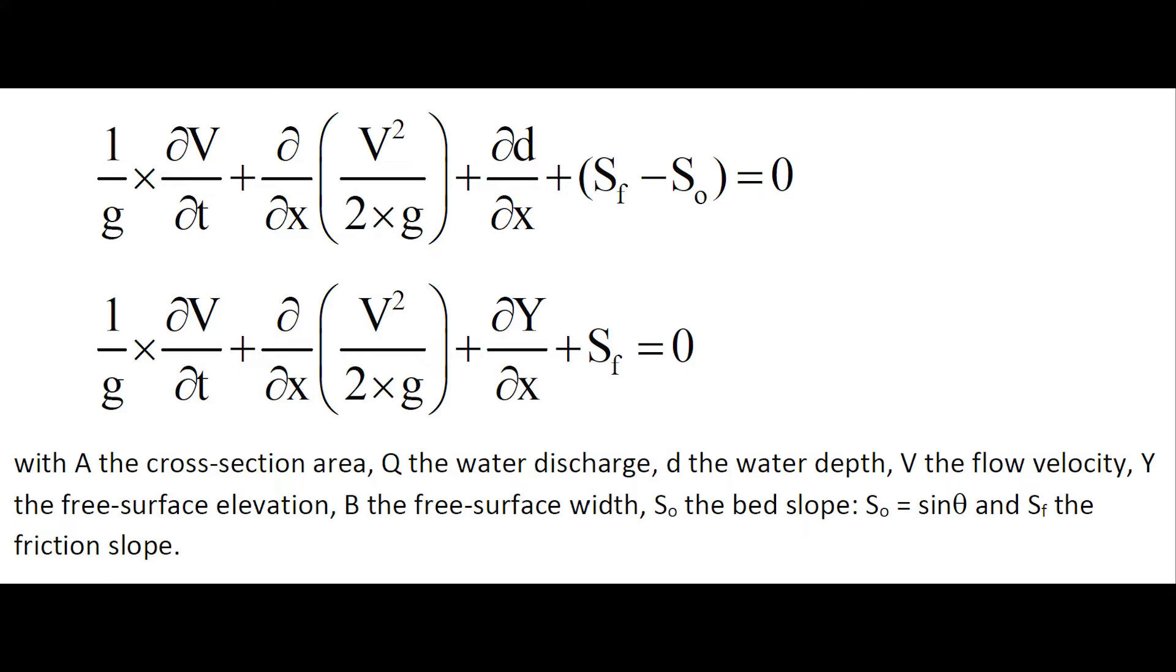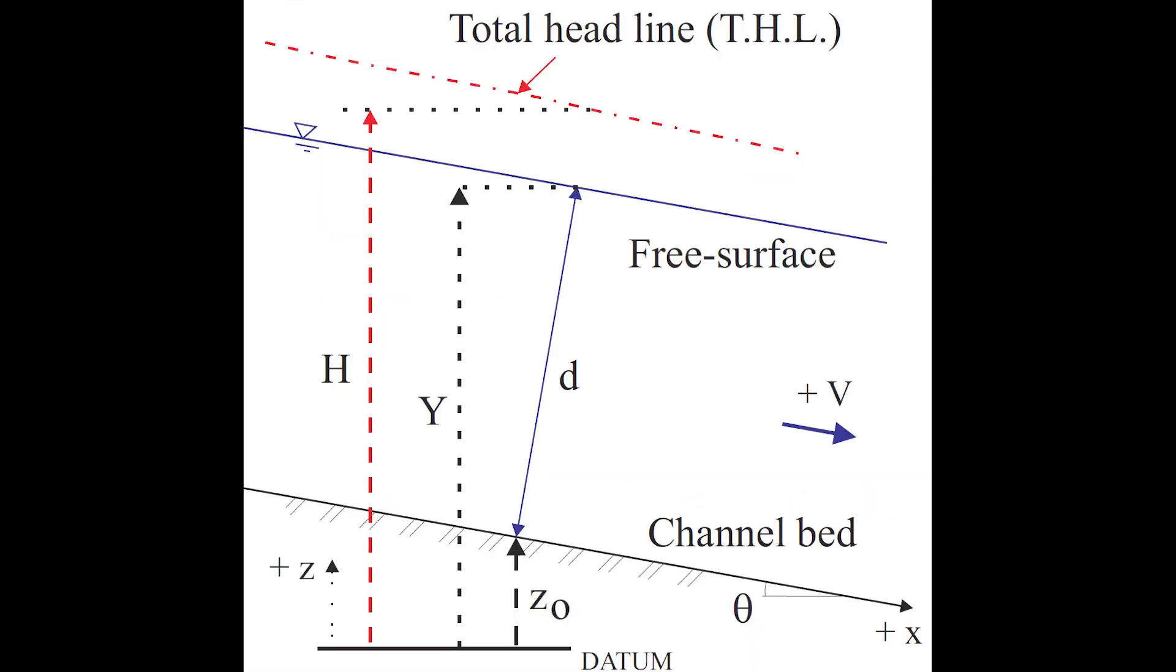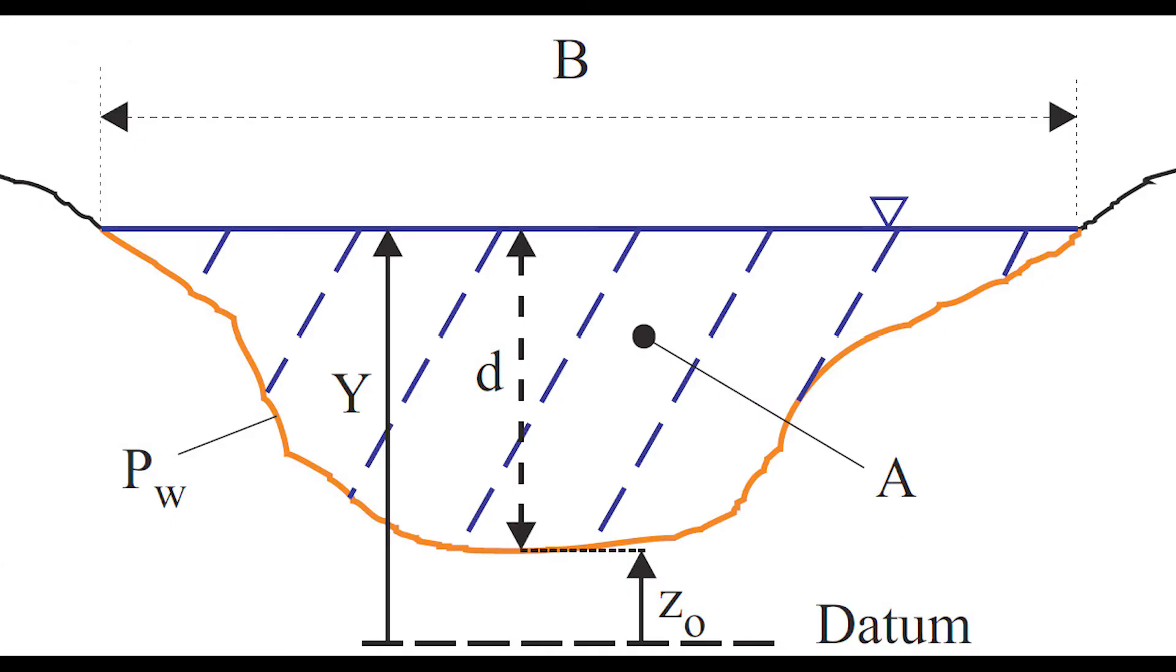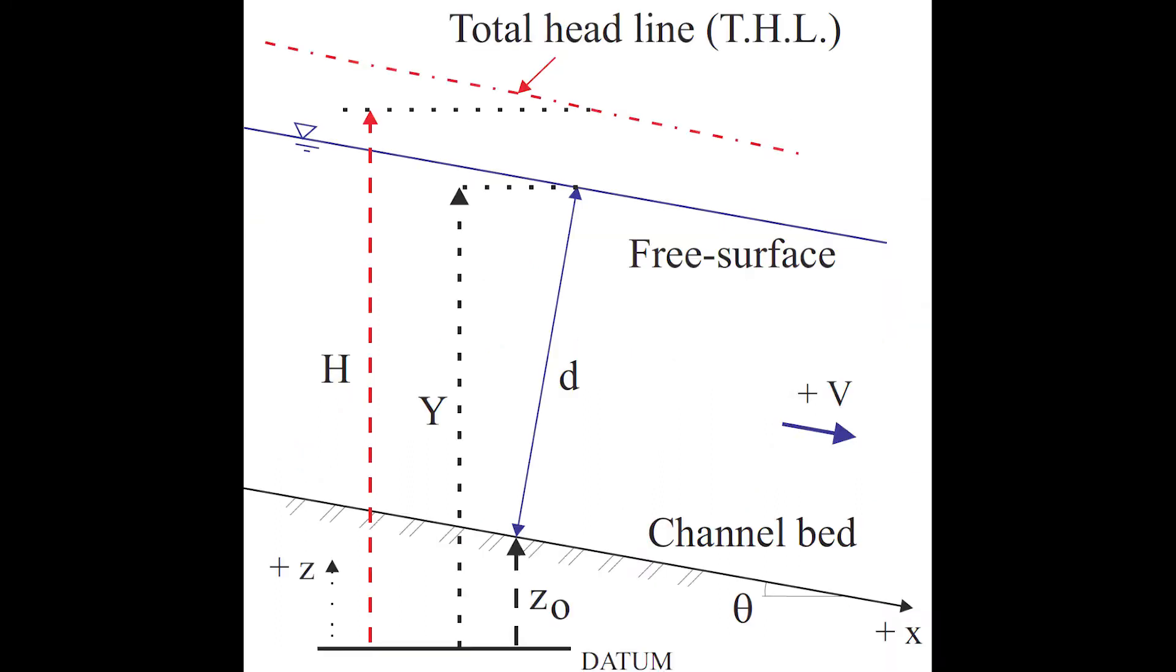In which A is the cross-sectional area, Q the water discharge, D the water depth, V the velocity, Y the free surface elevation, B the free surface width, S₀ equals sine theta (also called bed slope), and Sf the friction slope. This definition is illustrated in the two sketches.